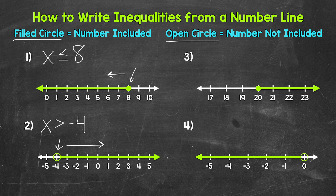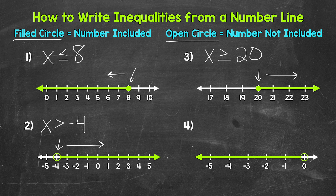Let's move on to number 3, where we have a filled circle at 20 and then an arrow pointing right. So we have all of the numbers greater than 20, and 20 is included — it is a solution. We have that filled circle there. So x is greater than or equal to 20.